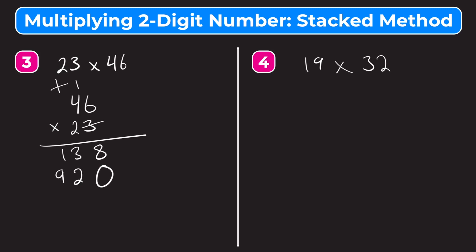So our final step is to add those two answers together. So we have 8 plus 0, 8, 3 plus 2, that's 5, and 1 plus 9, that is 10, put a comma. So our final answer, 23 times 46 equals 1,058. Let's circle that.